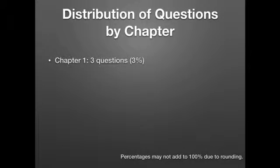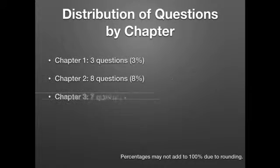What we're doing here is giving you a quick distribution of the questions by chapter, so you can see which chapters are relatively more important than others. The distribution is pretty even. There are a few chapters that are a little lighter. For example, chapter one only has three questions, and that's 3% of the total. Chapter two has eight questions for 8%. Chapter three has seven questions for 7%.